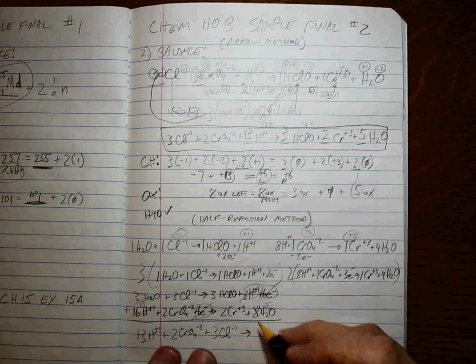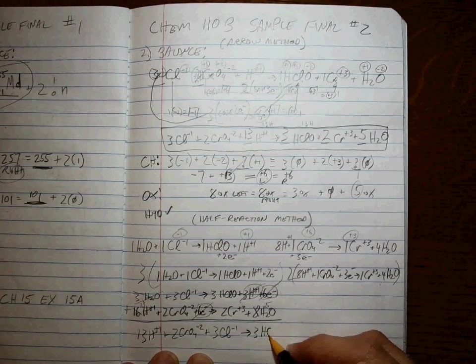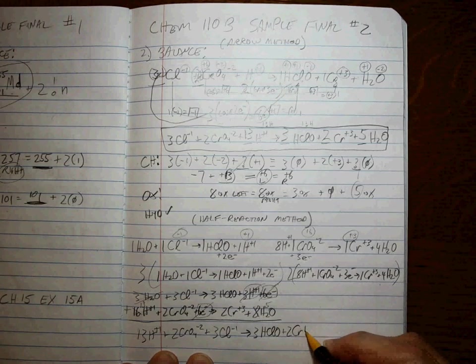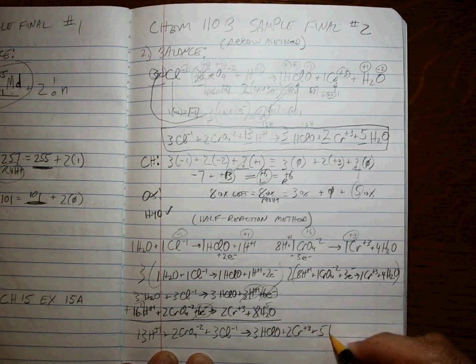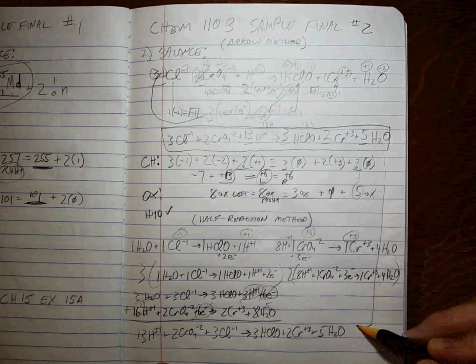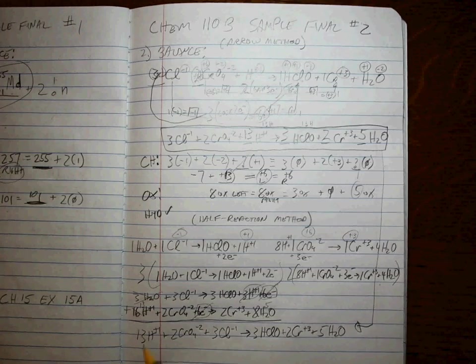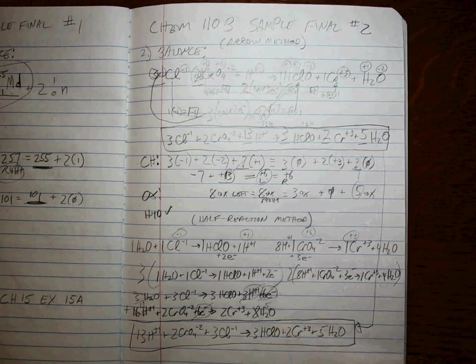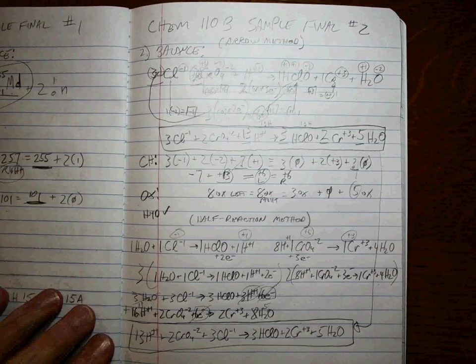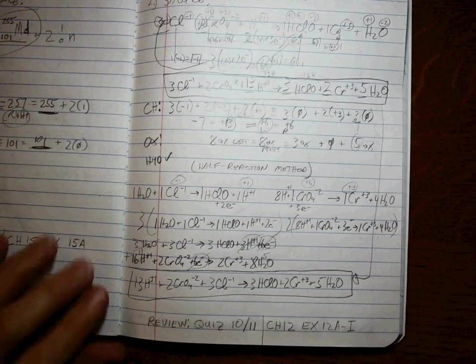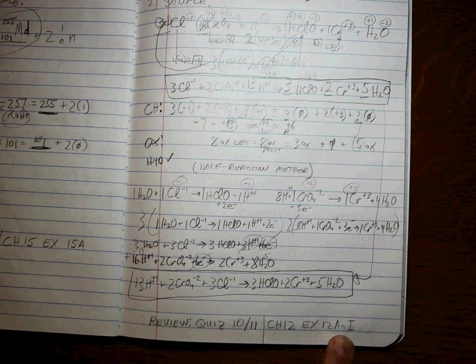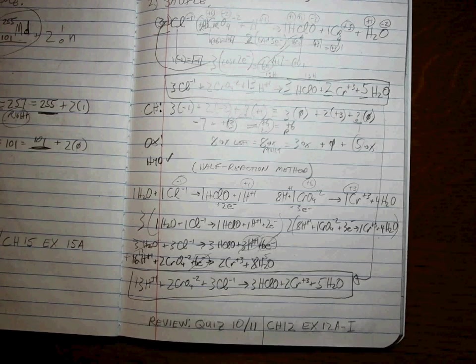Goes to three HClO plus two Cr plus three plus five H2O. Same thing. It's got to be the same thing. We're done. Okay. Either way, they both work. Whichever one works best for you. And again, if you need practice, there they are. Quizzes 10 to 11, chapter 12, exercises 12A through 12I. Good luck.